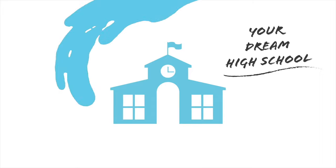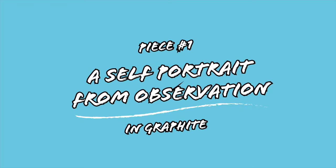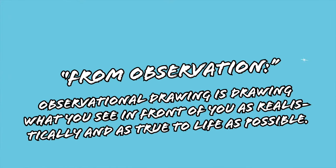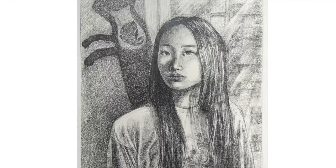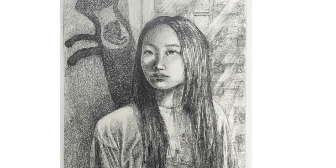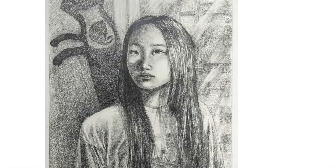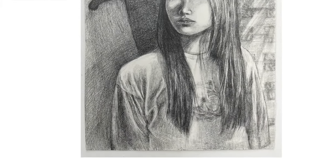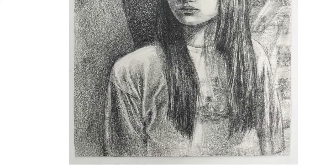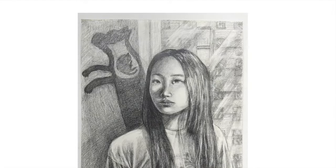Piece one: a self-portrait from observation, graphite on paper. Observational drawing is drawing what you see in front of you as realistically and as true to life as possible. Here's a great example of a successful self-portrait. The student has a clear ability to shade shapes and render 3D forms. They understood how a light source creates shadows and highlights in certain directions. The fabric of her shirt is challenging, but it's a well-drawn element.